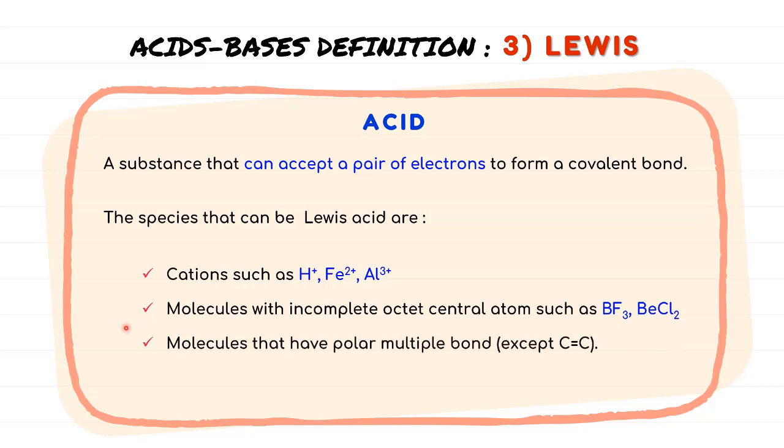And then, they can also be the molecules that have polar multiple bond except for the carbon-carbon double bond. And lastly, species can be Lewis acid when the molecules with a central atom that can expand octet such as SiCl4.